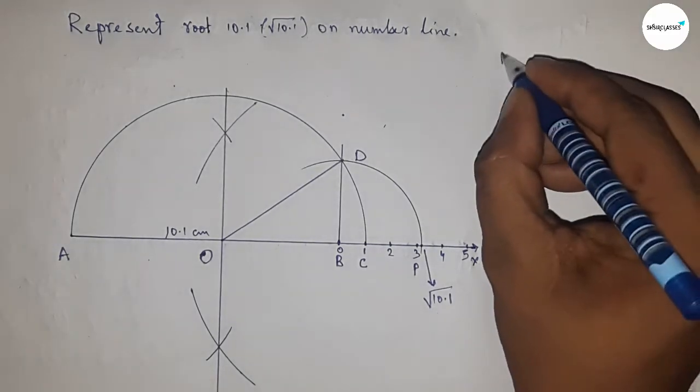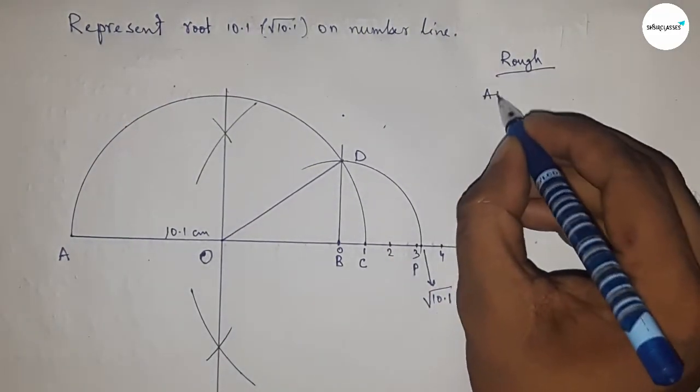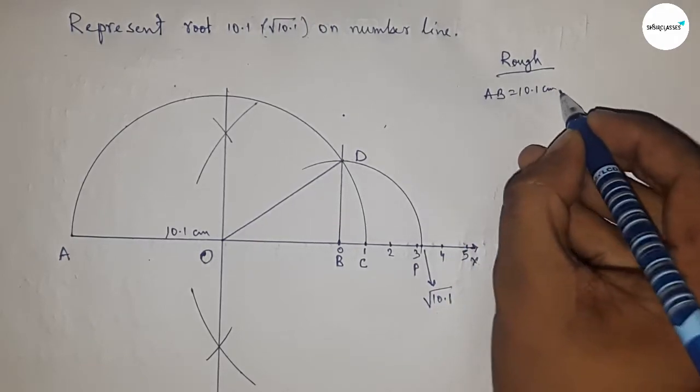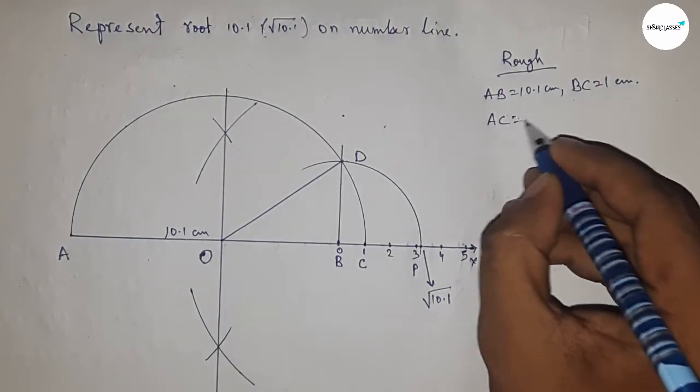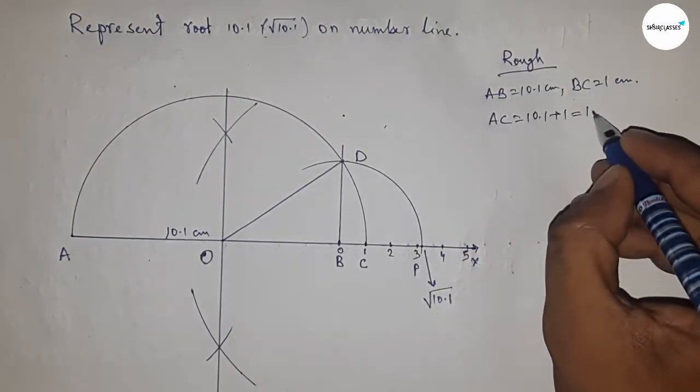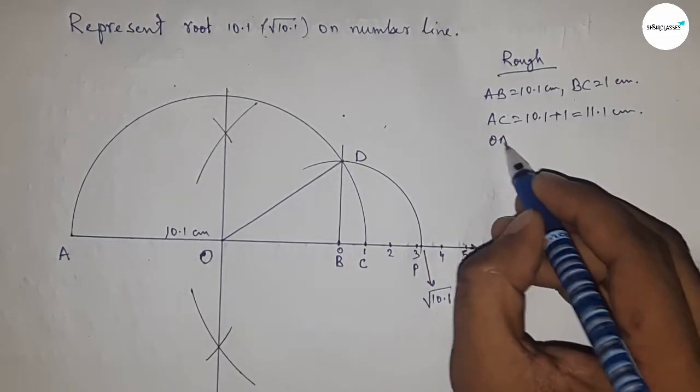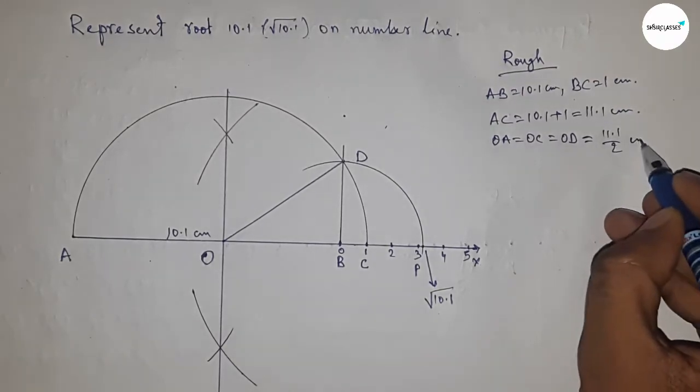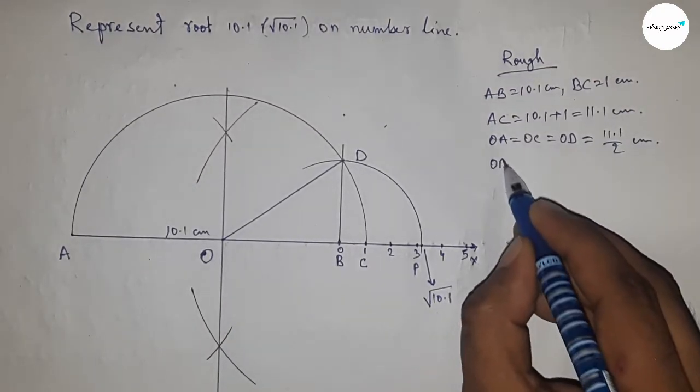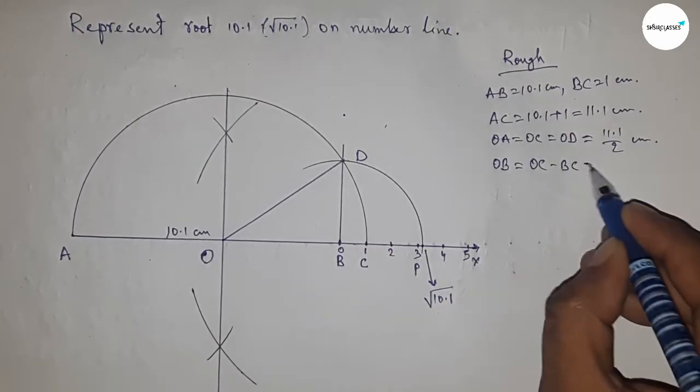Now roughly discussing the calculation. Given AB equal to 10.1 centimeter, BC equal to 1 centimeter, so we can write AC equal to 10.1 plus 1, so this is 11.1 centimeter. Now radius OA, OC, and OD equal to 11.1 by 2 centimeter. Distance OB equal to OC minus BC, so putting the value of OC and BC, after calculating this is 9.1 by 2 centimeter.